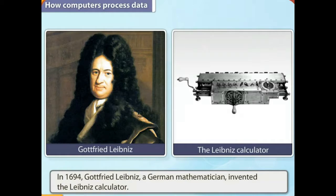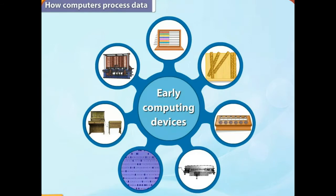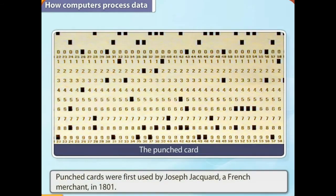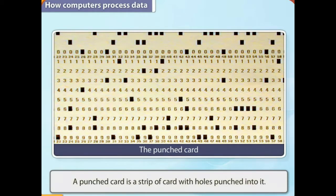The punched card: In 1801, punched cards were first used by Joseph Jacquard, a French merchant in the weaving business, to control a weaving loom. A punched card is a strip of card with holes punched into it.